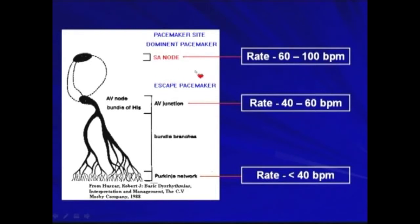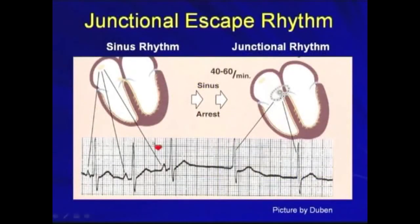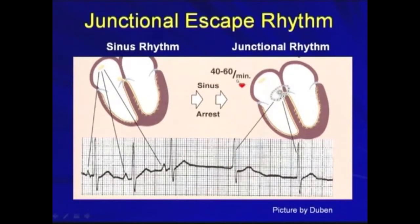Normally, it is the SA node that will dominate the rhythm. As shown here, this is a sinus rhythm. When there's a period of sinus arrest, the junctional escape rhythm will take over, and usually the rate is 40 to 60 beats per minute. But if there's an ectopic focus at the junction, then it may give rise to a junctional tachycardia or accelerated junctional rhythm.